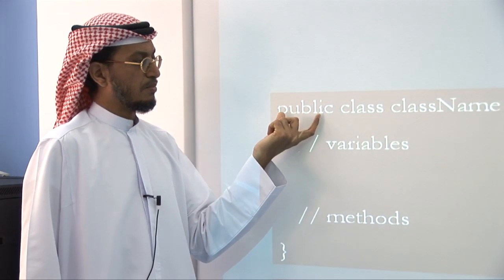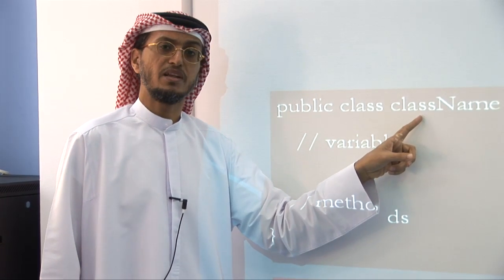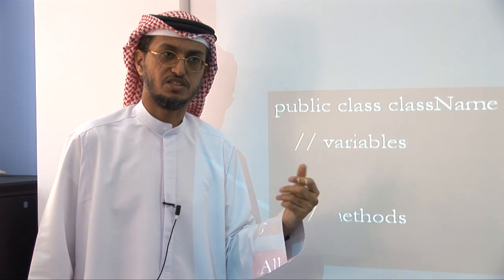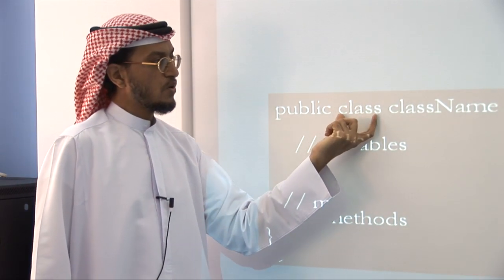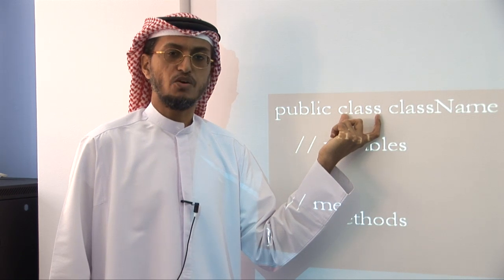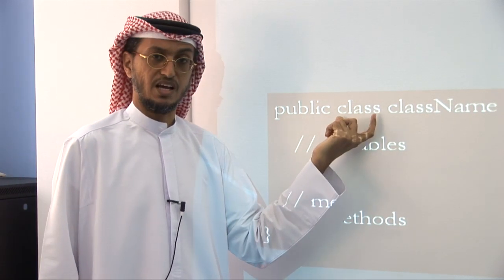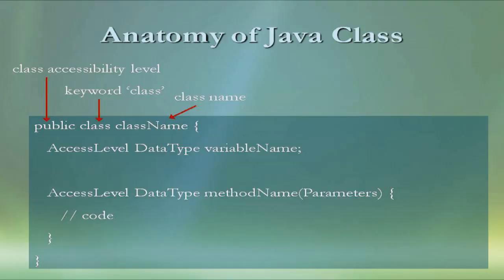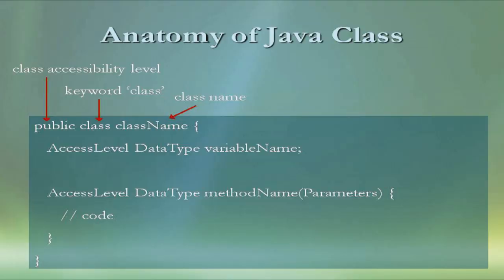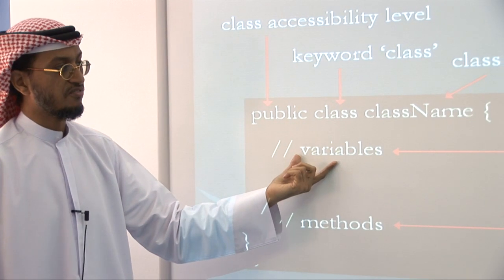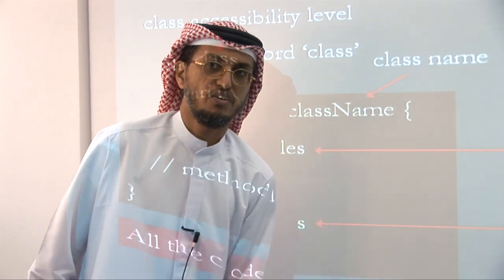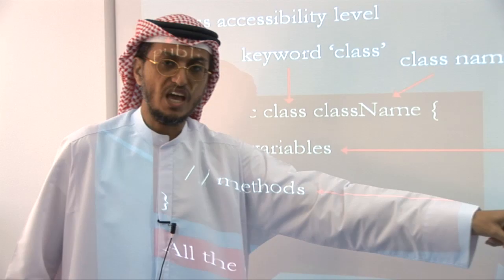The word public means that this class is a public class accessible to others. It's not a private class. The keyword class is mandatory here because it is the keyword that you use to define the class itself. So again: public, space, class, space and then the class name. Public represents the class accessibility level. Class is just a keyword. Class name is the one that you give to the class. Variables represent the attributes of the class. Methods represent the behavior of the class.